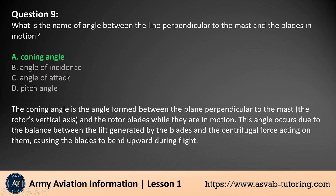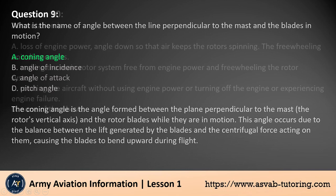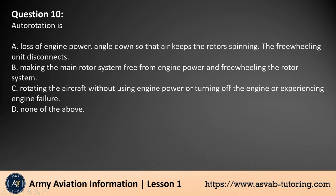The coning angle is the angle formed between the plane perpendicular to the mast — the rotor's vertical axis — and the rotor blades while they are in motion. This angle occurs due to the balance between the lift generated by the blades and the centrifugal force acting on them, causing the blades to bend upward during flight.